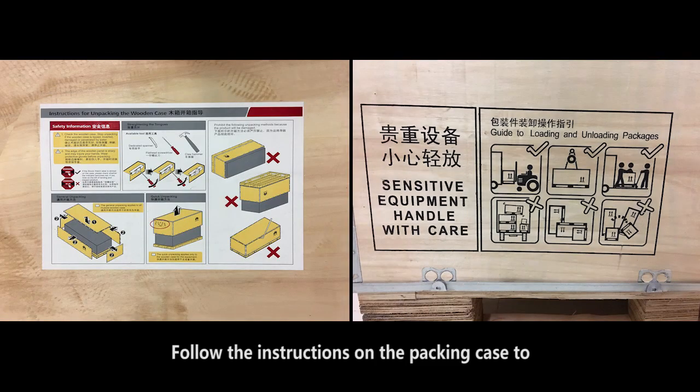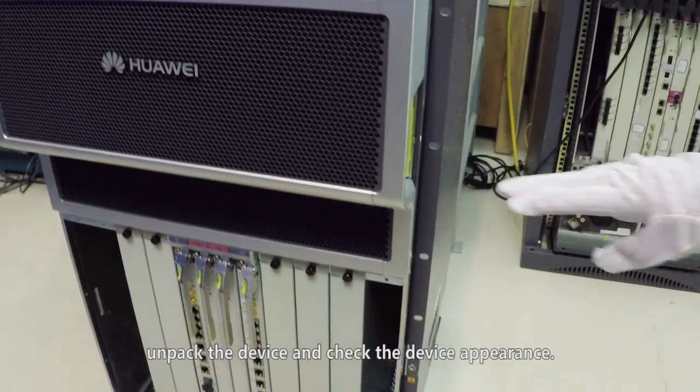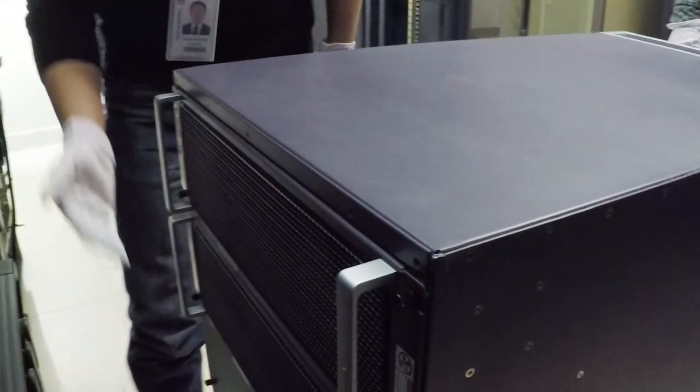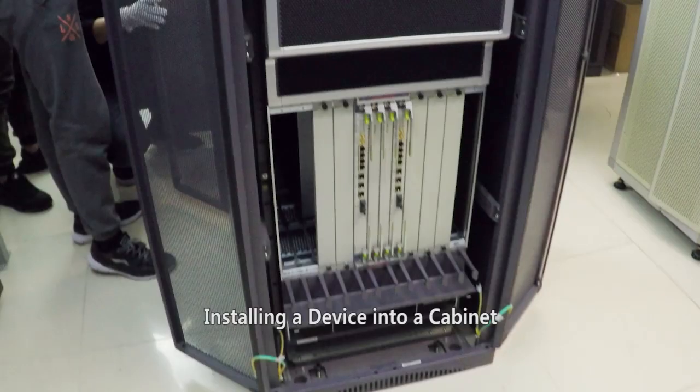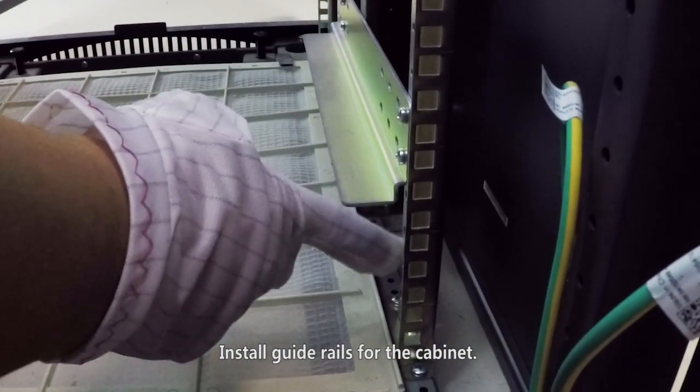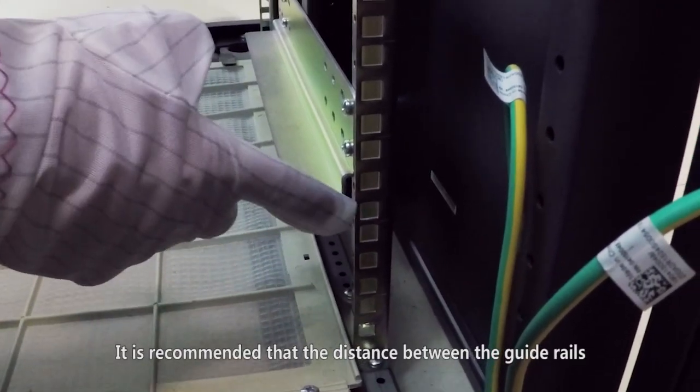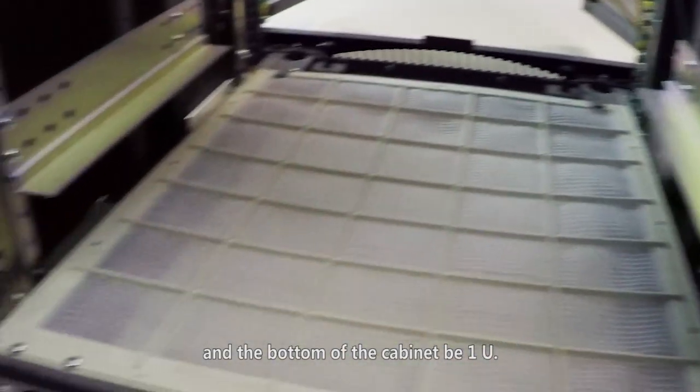Follow the instructions on the packing case to unpack the device and check the device appearance. Install guide rails for the cabinet. It is recommended that the distance between the guide rails and the bottom of the cabinet be 1U.